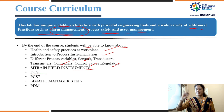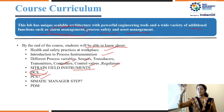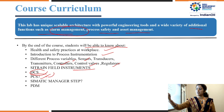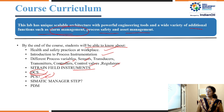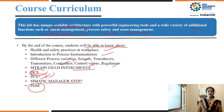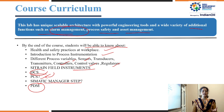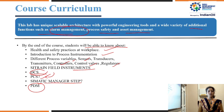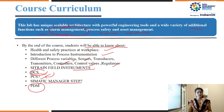We are also provided with a DCS controller along with PCS7, and a software called SIMATIC Manager Step 7 through which analysis is done. PDM is also provided, from which we can identify devices connected in the field. Various devices connected through a network use protocols such as PROFINET or HART, and accordingly the instruments are called PROFINET, PROFIBUS, or HART devices.